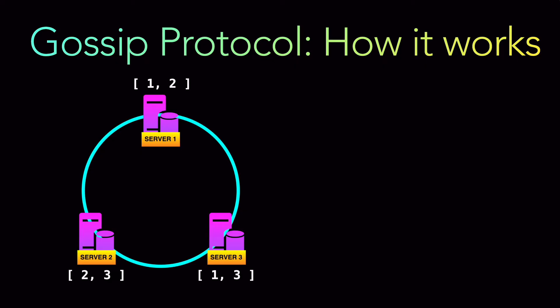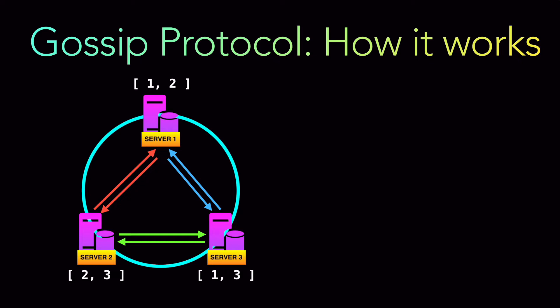So server one doesn't have data three, server two doesn't have data one, and server three doesn't have data two. We want every node to have all the information — that is what makes it resilient and robust. What happens is every node figures out which node to share information with. Server two assigns server one as the node to share information with, server one chooses server three, and server two and server three also exchange information with each other. Basically, each server is fanning out the information it stores to all other nodes in the network.